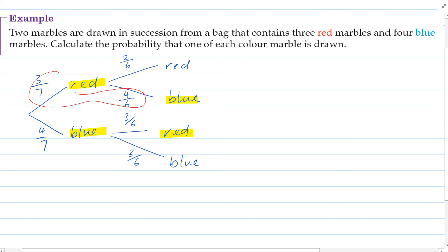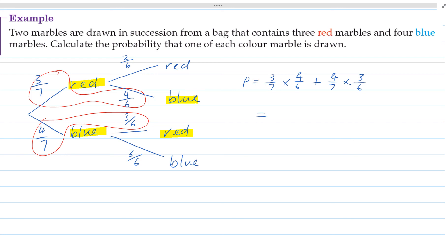So we'd be timesing these probabilities together, and then adding them to the multiple of those probabilities. So our probability would be 3 over 7 times 4 over 6 plus 4 over 7 times 3 over 6, which of course is 4 over 7.